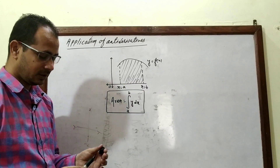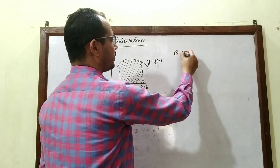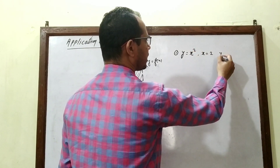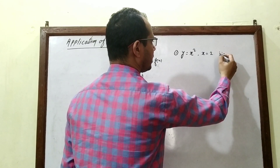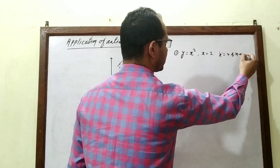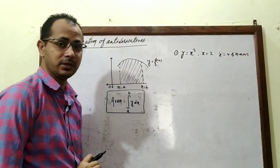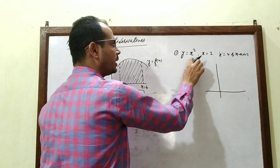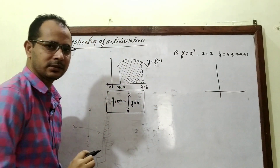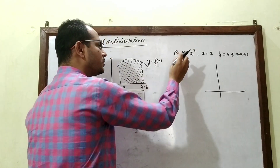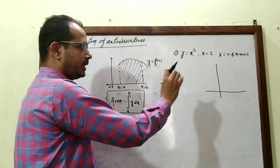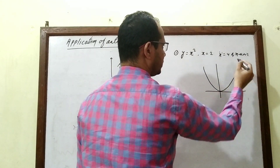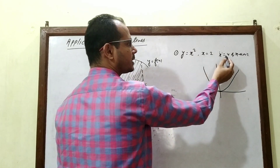Okay, here is an example: Find the area enclosed between y = x², x = 2, x = 4, and the x-axis. Now, y = x² generates a parabola passing through the origin, forming a U-shape. We are given x = 2 and x = 4.